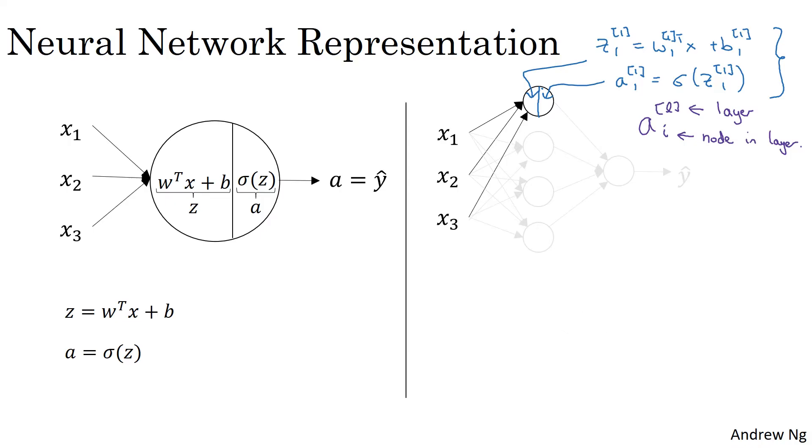Now let's look at the second node in the neural network, or the second node in the hidden layer of the neural network. Similar to the logistic regression unit on the left, this little circle represents two steps of computation. The first step is it computes z, this is still layer one, but now it's the second node, equals w transpose x plus b12, and then a12 equals sigmoid of z12.